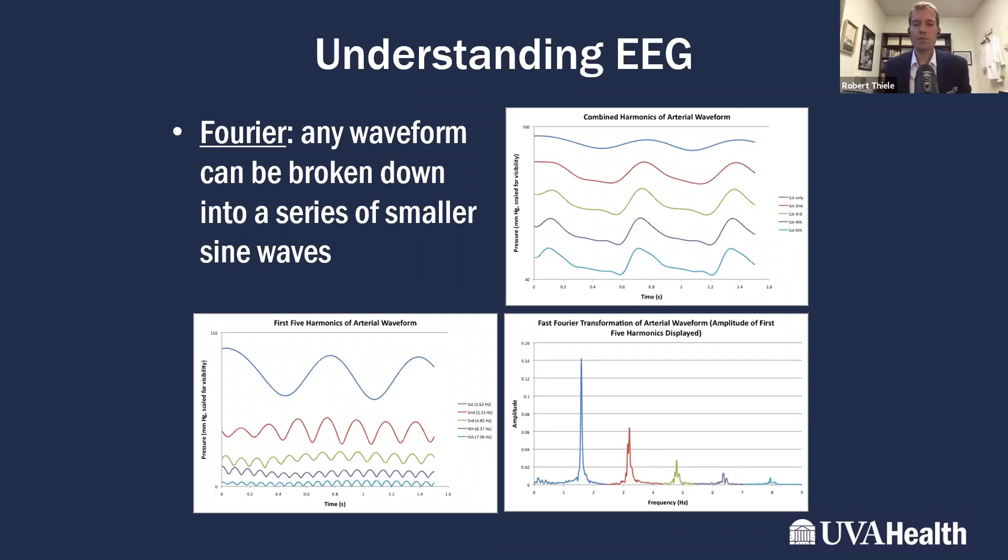On the bottom right, you actually have this blood pressure tracing in the frequency domain. On the x-axis, it's frequency, and on the y-axis is amplitude. What this means is that a 1.6 hertz waveform with an amplitude of 0.34, if I add that to a 3.2 hertz waveform with an amplitude of 0.07, that's in red, that's the second harmonic. The third harmonic is at about 4.8 hertz at 0.03 for the amplitude. If I add those up, that actually recreates this blood pressure tracing. It's a different way to describe a waveform.